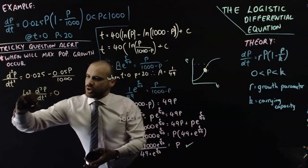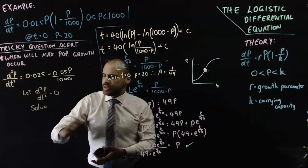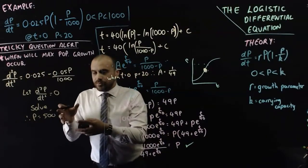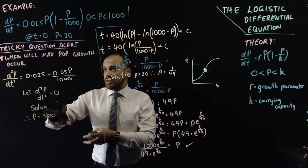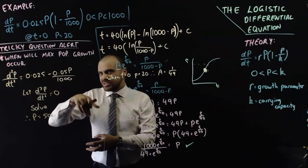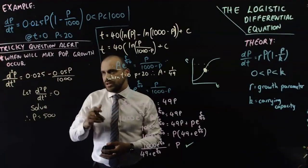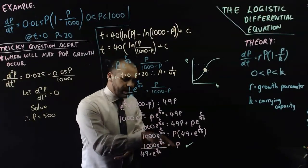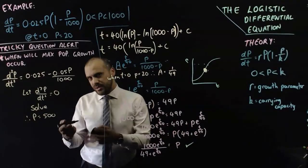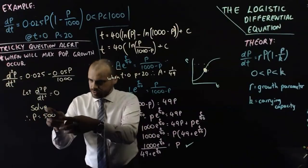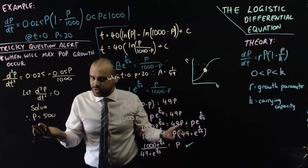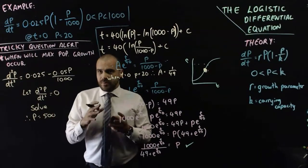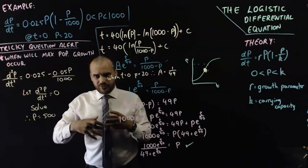Setting the second derivative equal to zero and solving gives P equals 500. This means when the population equals 500, that is when maximum population growth occurs. But that's a population value, not a time. To find when it occurs, substitute P equals 500 into our population equation and solve for T. That's relatively straightforward. And that's the logistic differential equation — there's a lot here, but it's the culmination of quite a few skills learned over the course of this unit.